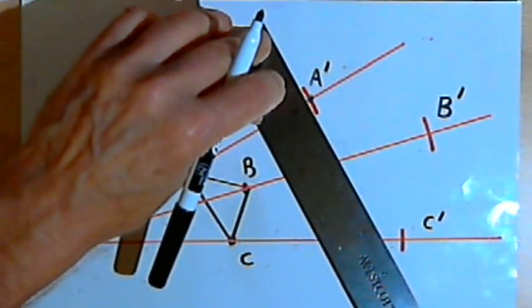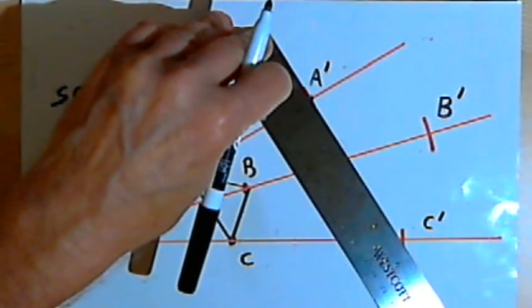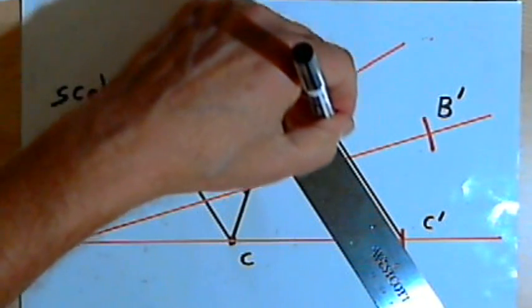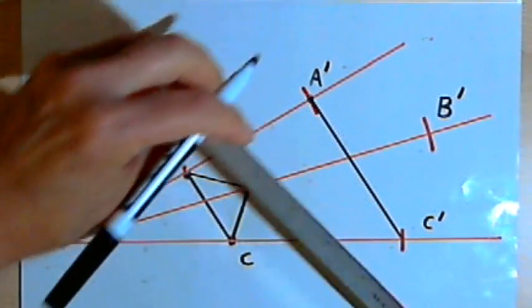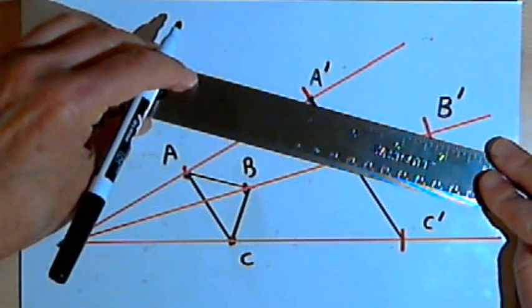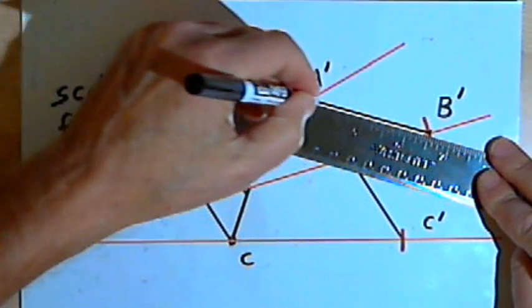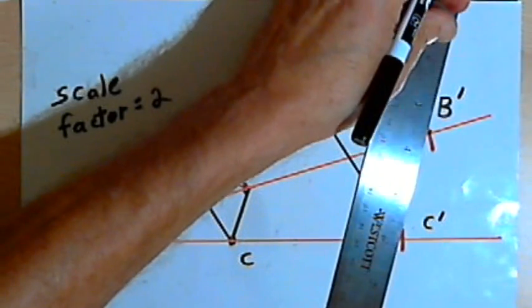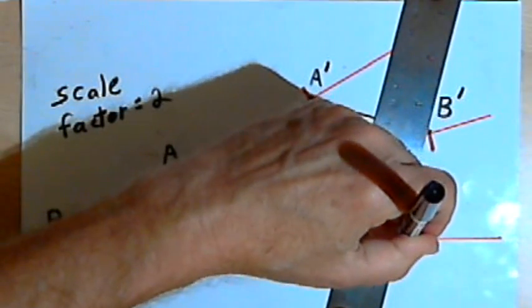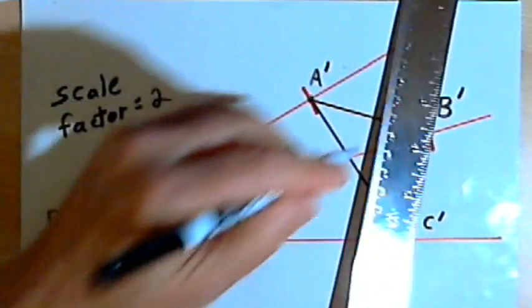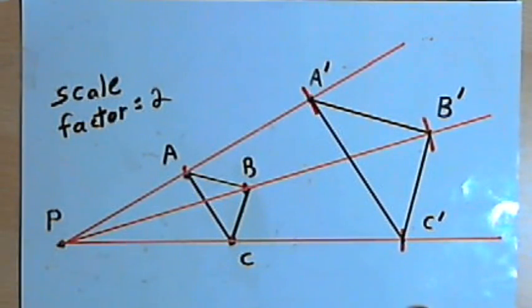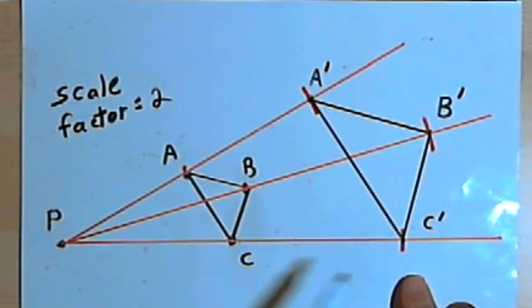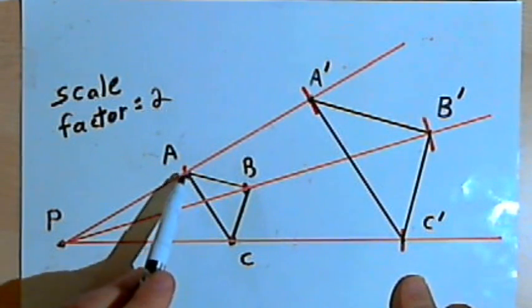Now for my new image, all I have to do is connect points A prime, B prime, and C prime. So there's line segment A prime C prime, A prime B prime, and B prime C prime. Triangle A prime B prime C prime is a dilated image of triangle ABC.